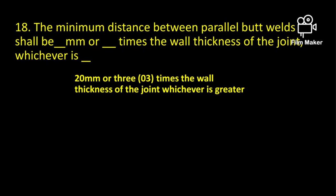The minimum distance between parallel butt welds shall be 20 mm or 3 times the wall thickness of the joint, whichever is greater.